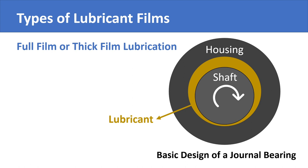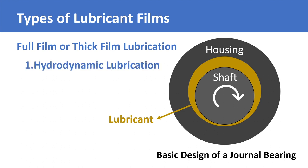Thick film lubrication is further divided into two types. The journal bearing example comes under hydrodynamic lubrication — that is, the type of lubrication in which the film is thick enough to keep the two parts away from each other.